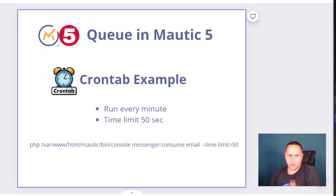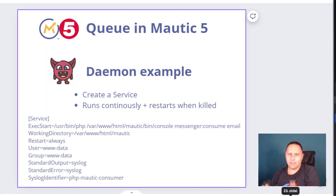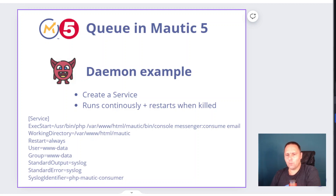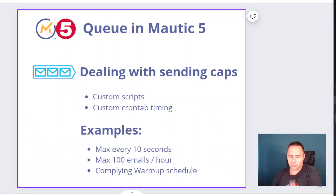Both the crontab method and the daemon method will send out emails as fast as possible. If you have a very powerful system and a slow SMTP, this is going to cause problems because you will send emails faster than the SMTP can process them — either you'll get put on a ban list, they'll lose some of your messages, or they'll block you. So you should make sure you're not sending faster than your SMTP provider allows. In my other video about the email setup, I address that there are ways to manage this directly from the SMTP settings. But if you can't do that for some reason, you can manage it through a combination of scripts, timing your crontab according to the limits allowed by your SMTP partner.